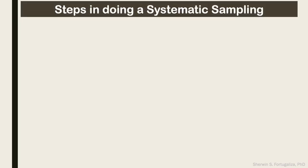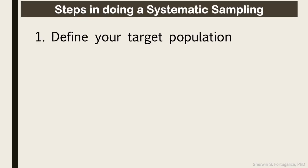What are the necessary steps in doing a systematic sampling? First, you need to define your target population. Similar to other research projects, you need to decide on the population that you will be studying.